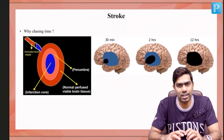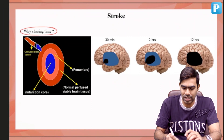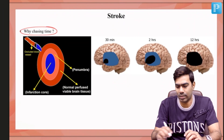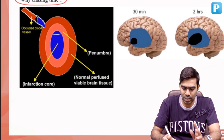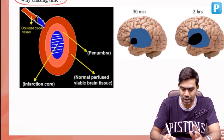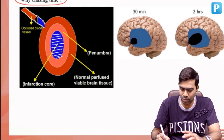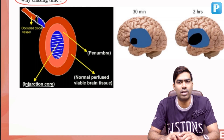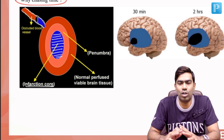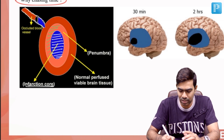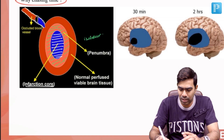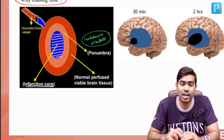Once you identify the stroke and get the basic details done, you need to understand why we are chasing time. In a patient with acute ischemic stroke, there is an area that is dead forever — nothing can be done about it — and this is what we refer to as the infarct core. What we are trying to do is salvage the surrounding area, which is ischemic but still viable.